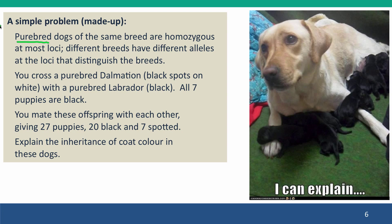Different purebred breeds will have different alleles at the loci that distinguish the breeds. So in this problem, you cross a purebred Dalmatian dog — black spots on a white background — with a purebred Labrador who's black. All seven of the puppies are black. And you mate these offspring later, when they grow up, with each other, giving 27 puppies, 20 of which are black and seven are spotted. And what you're asked to do is explain the inheritance of coat color — how many genes there are, what are the alleles of these genes, and how do these alleles control the phenotype.